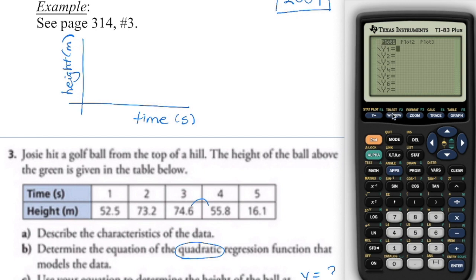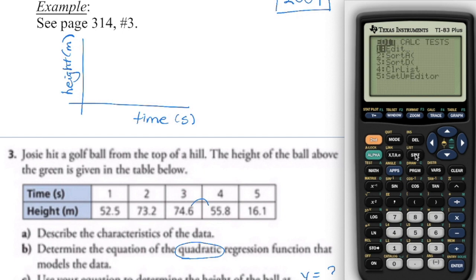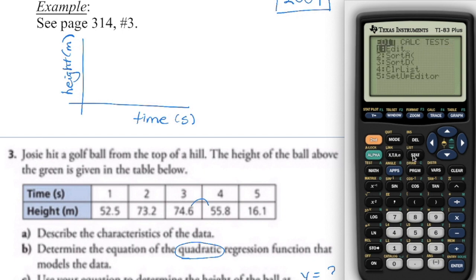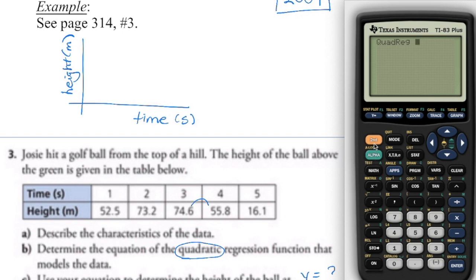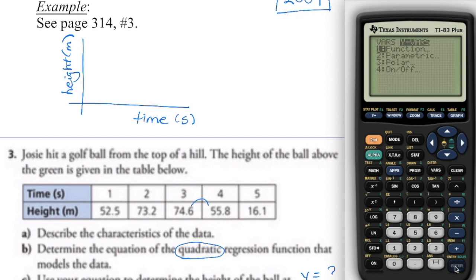Turn on the stat plot, set an appropriate window, enter the data. Go into Stat, over to Calculate — it's a quadratic regression, so choose number five. Go list one, comma, list two, comma, Vars over to Y-Vars, enter three times. That produces the curve of best fit and the graph. We know it's a quadratic, so we have a y-intercept of 11 and A is negative, so we know we're opening downward.